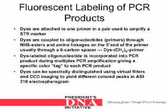Fluorescent labeling of PCR products: dyes are attached to one primer in a pair and are used to amplify STR markers. Dyes are coupled to oligonucleotide primers through NHS esters and amine linkages on the 5' end of the primer, usually through a 6-carbon spacer. Dye-labeled oligonucleotide is incorporated into PCR products during multiplex PCR amplification, giving a specific color tag to each PCR product.